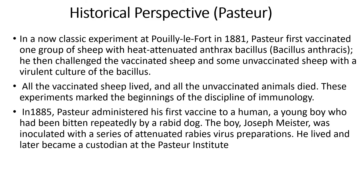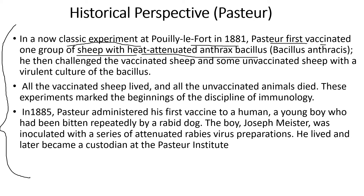In a now classic experiment at Pouilly-le-Fort in 1881, Pasteur first vaccinated one group of sheep with heat-attenuated anthrax bacillus and then challenged the vaccinated sheep and some unvaccinated sheep with a virulent culture of bacillus. All the vaccinated sheep lived and all the unvaccinated animals died. This marked a major success — the sheep previously injected with heat-attenuated anthrax bacillus were protected, while the unvaccinated sheep died. These experiments marked the beginning of the discipline of immunology.